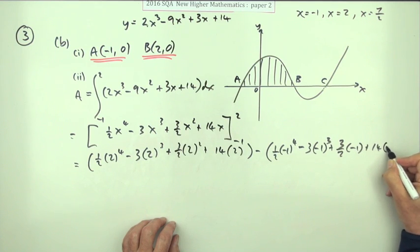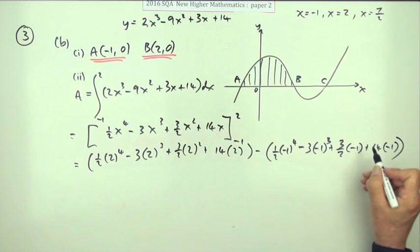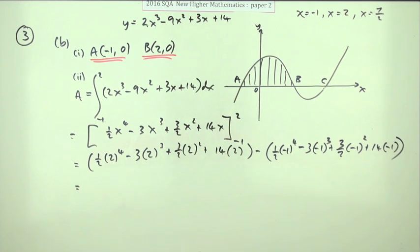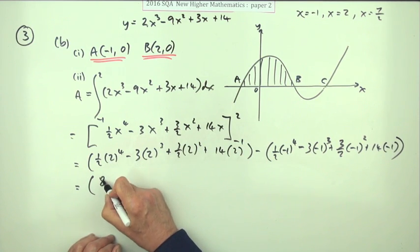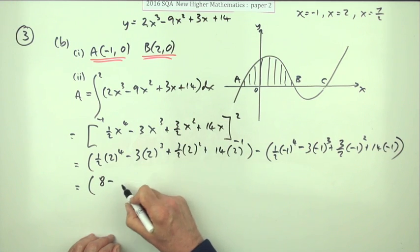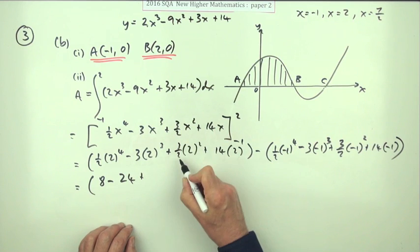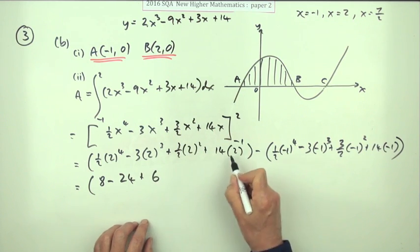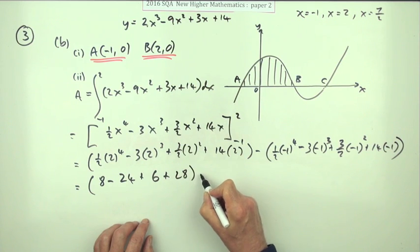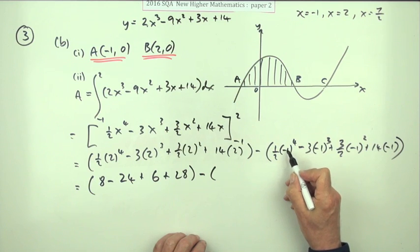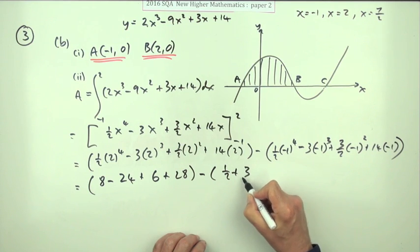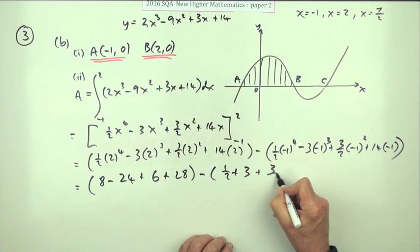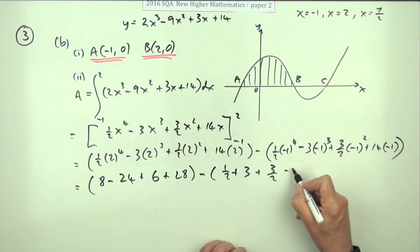And finally 14 times negative 1, and I forgot that little square there. Now it's just evaluated. You could just type in your calculator but I'll just do it. So what have I got? That'll knock out one of them, so 2 to the 3, that's 8. That's 3 times 8 which is 24, and that's going to knock out one of them leaving 2, which is 6, and that's plus 28. Then that's positive 1 so it's a half. That's negative negative so it's plus 3. That's going to be positive as well so it's plus 3 upon 2, they match, and then minus 14.